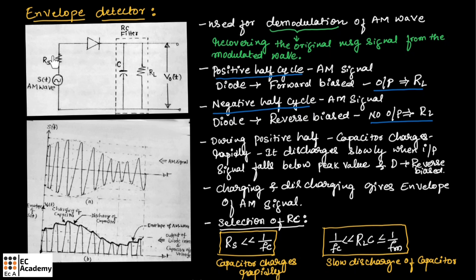In this circuit, we need to choose the resistor value as well as capacitor value very carefully. The charging time constant RS×C must be very much less than the carrier period 1/FC to ensure that the capacitor charges rapidly. The discharging time constant RL×C should be long enough to ensure the capacitor discharges slowly through the load resistor. We choose the value of RL×C between 1/FC and 1/FM to ensure slow discharge of the capacitor.